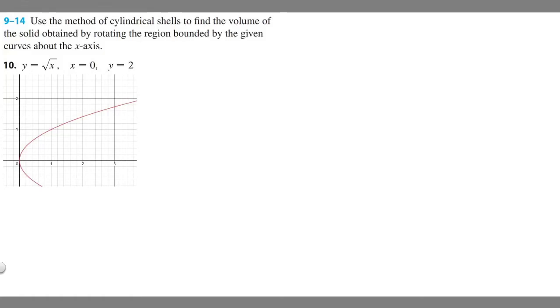In this problem, we're told to use the method of cylindrical shells to find the volume of the solid obtained by rotating the region bounded by the given curves about the y-axis. This is number 10, and we're told y equals the square root of x, x equals 0, and y equals 2. So I went ahead and graphed it here. You can graph it if you want. I just think it makes it easier to solve.